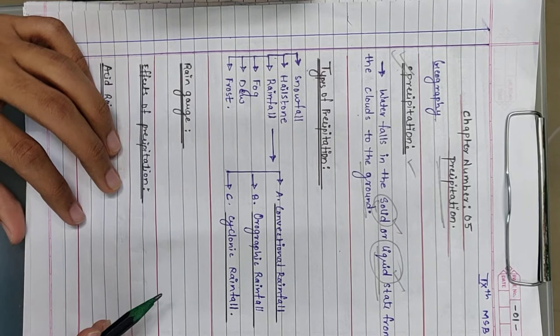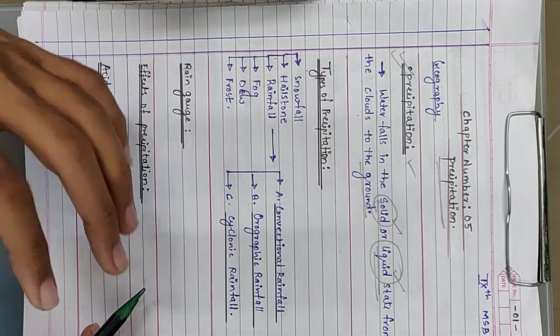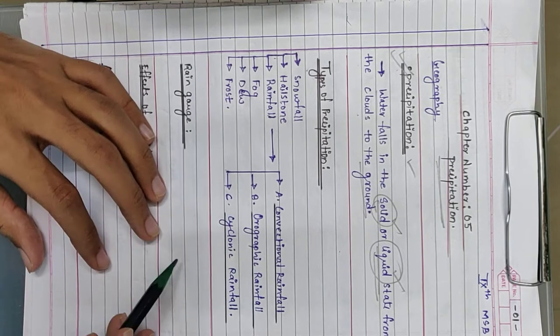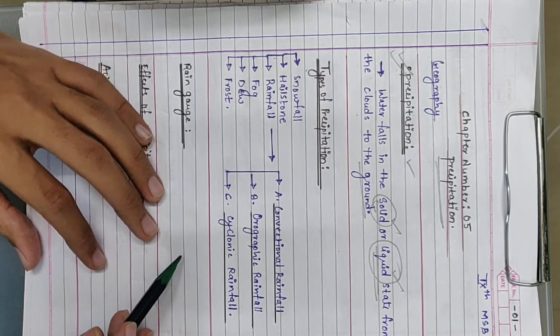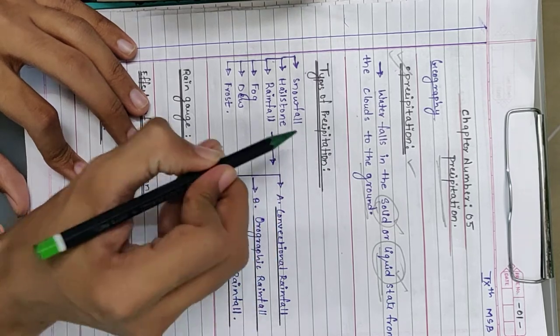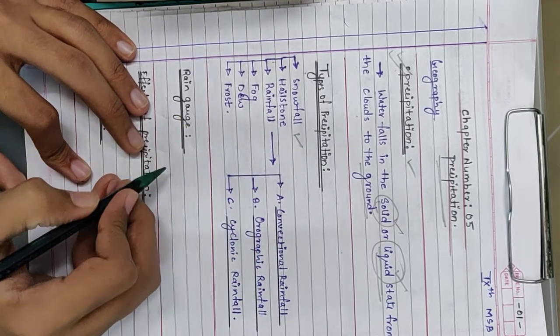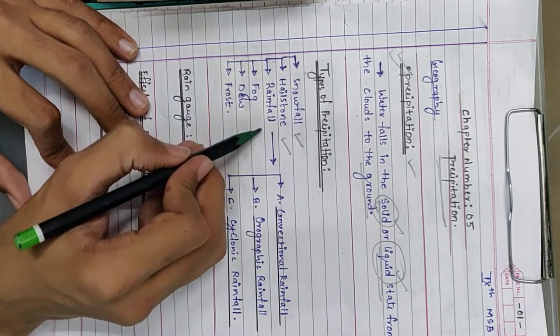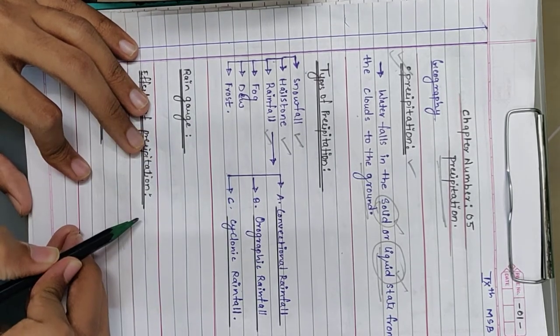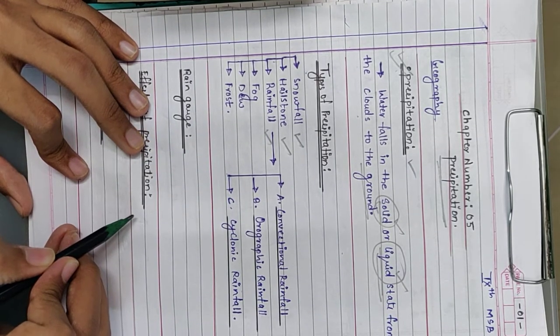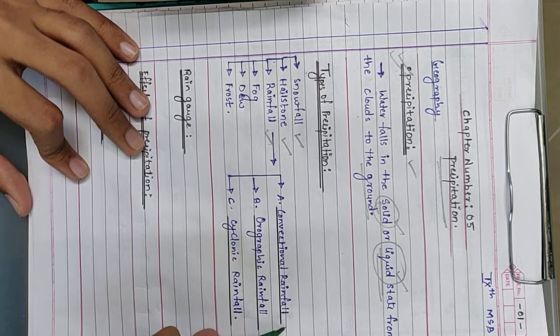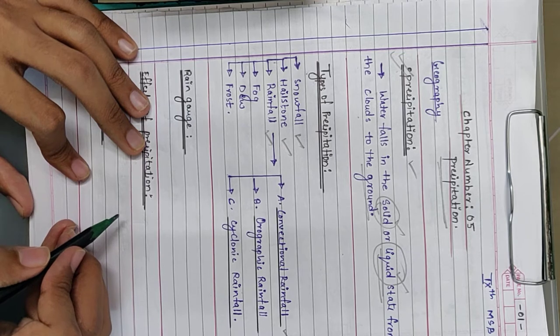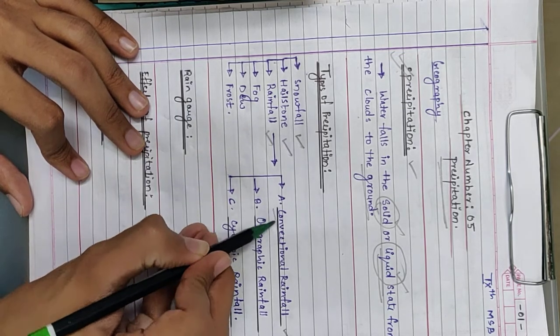There are different types of precipitation. In this chapter, you will cover types of precipitation. We are going to study snowfall, hailstone, and rainfall. Rainfall has sub-classifications of three types: conventional rainfall, which is our normal rainfall.